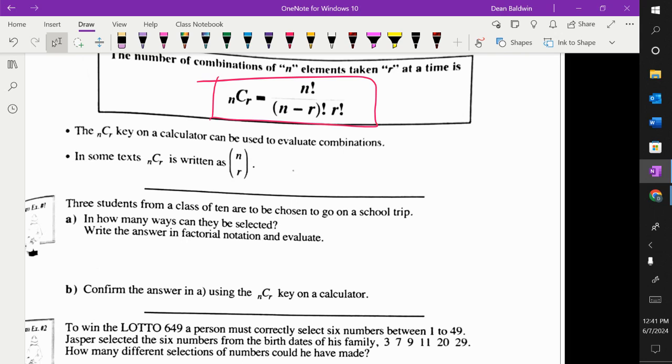Three students from a class of 10 are to be chosen to go on a school trip. How many ways can you choose the three students? Is this a combination or a permutation? That's always your first question. Combination. Because the order doesn't matter, you get picked. So it's 10 students. I need three of them. 10 choose three. Find the N, C, R button on your calculator, please. So you can do it. Because this button we will use all the time. Unless you want to plug it into that formula. But then that's a bit tedious.